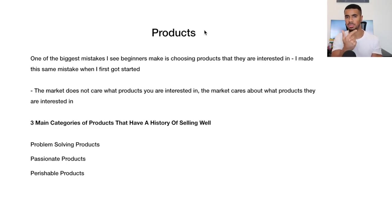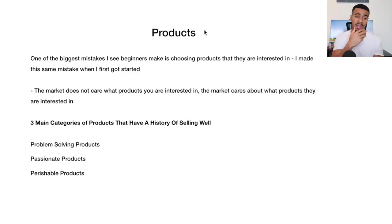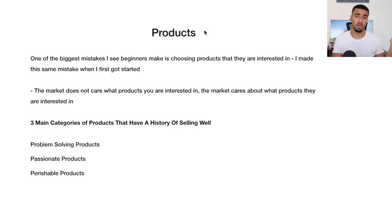Another example of a perishable product is charcoal toothpaste — it solved the problem of yellow teeth, and once you use it up you need to buy more to maintain results. These are the three main categories I've seen do really well. I recommend that if you're just getting started, spend time looking through different niches but look specifically for these kinds of products — problem-solving, passionate, or perishable — not just random products that don't fit these categories.